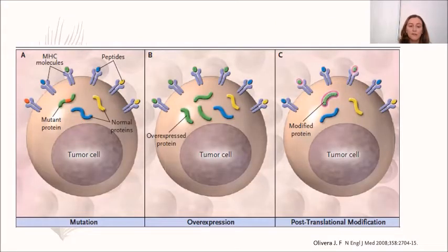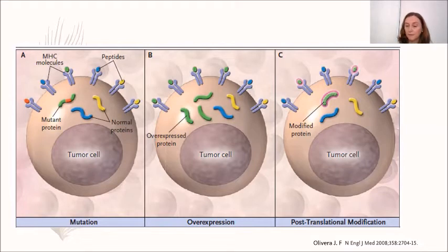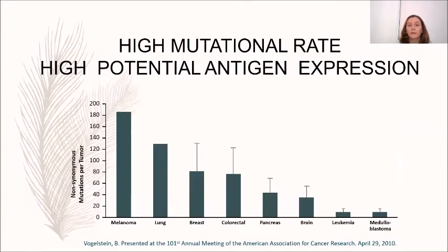Antigens can be mutated proteins, normal proteins that are overexpressed, or proteins modified by post-translational actions. All of these proteins can elicit responses in B cells and/or T cells. Different tumors have different mutational rates; those tumors with high mutational rates have high potential antigen expression and are eligible for immunotherapy.